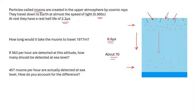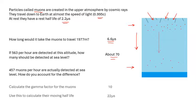The reason is time dilation: the muons are traveling so fast that time slows down for them, extending their effective half-life from 2.2 microseconds to about 22 microseconds. The Lorentz factor γ for the muons works out to approximately 10, so far fewer of them decay in transit.